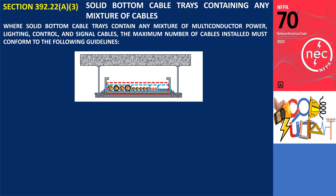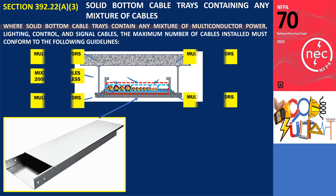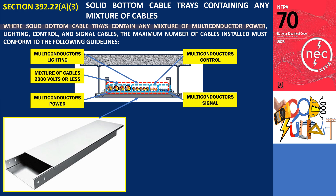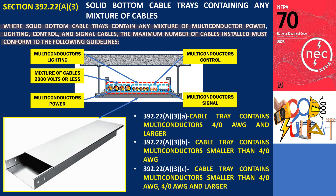Section 392.22(A)(3) — Solid Bottom Cable Trays with Mixed Cables. In solid-bottom cable trays that contain multi-conductor power or lighting cables, or any combination of multi-conductor power, lighting, control, and signal cables, the maximum number of cables must adhere to the guidelines under subsections 392.22(A)(3)(a) through (c).